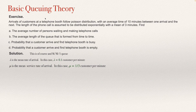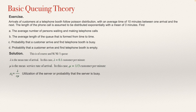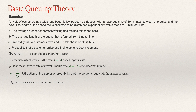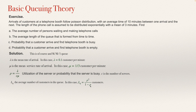Some of these formulas for queuing theory are intuitive; some others need a proof, and I will be using another video for proving some of them. The first formula is that rho equals lambda over C·mu. Rho is what we call the utilization of the service, or the probability that the server is busy. C is the number of servers — in this case, C equals 1. LQ is the average number of customers in the queue, and for an M/M/1 queue, LQ equals rho squared divided by 1 minus rho.